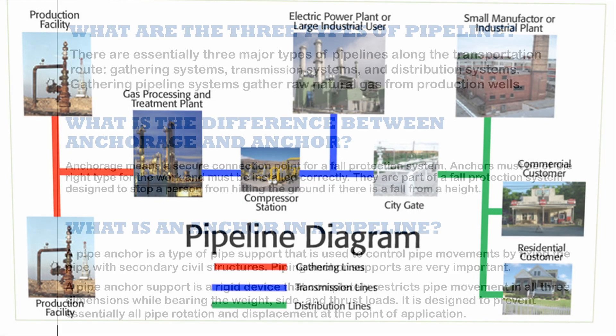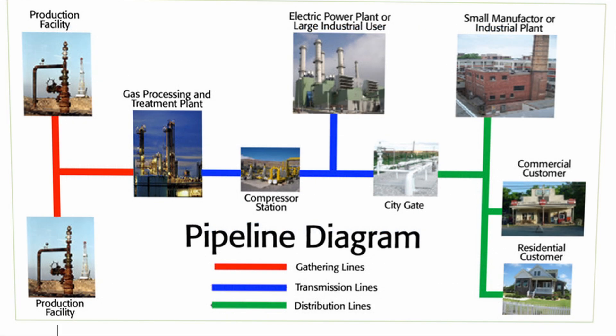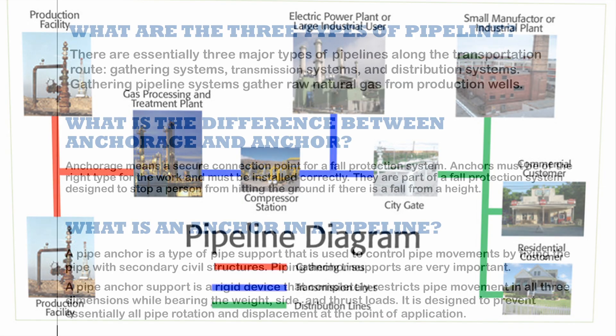First of all, what are the three types of pipelines we basically have in the oil and gas field? Essentially three major types of pipeline are available along the transportation route: gathering system, transmission system, and distribution system. Gathering pipeline systems gather raw natural gas from production wells — you can see the flow lines and trunk lines.